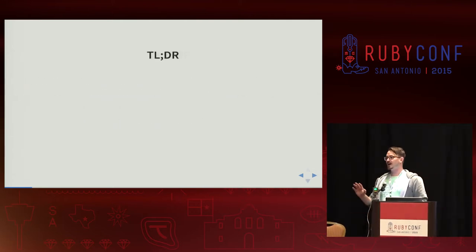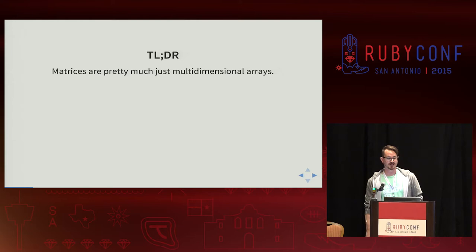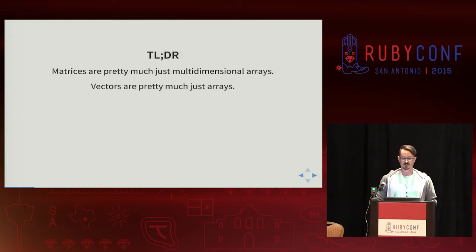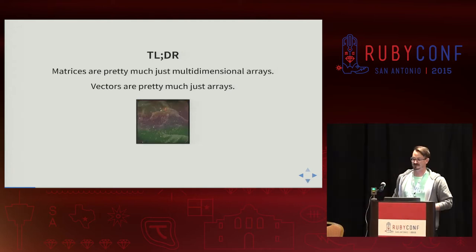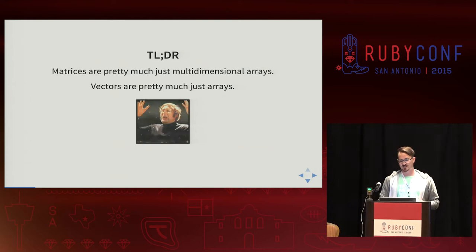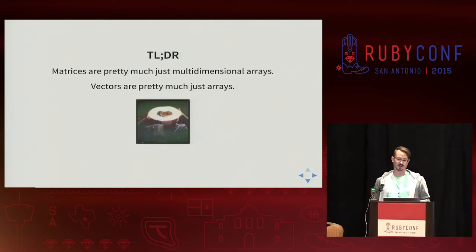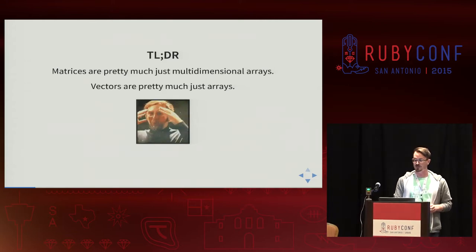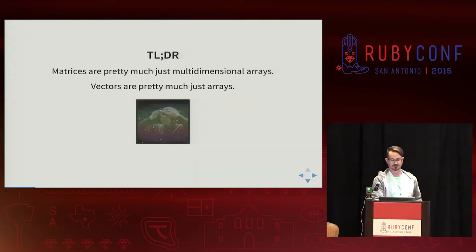So the too-long-didn't-read version: matrices are pretty much just multidimensional arrays. Vectors are pretty much just arrays. Those are interesting factoids, but the context around them is what kind of fleshes out this talk. So we're going to explore that context to a greater degree.